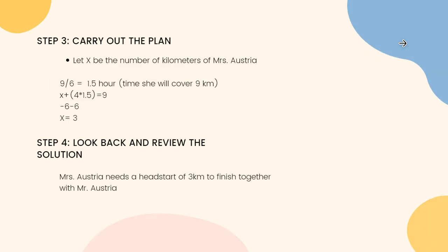Now let's carry out the plan. Let us first find the time using the formula: time equals distance over speed. Now let's substitute — nine kilometers is the distance that they need to run, and six kilometers is Mr. Austria's speed over a certain period of time. With this, we will be left with 1.5 hours.